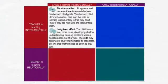The child and the teacher both do maths. One sign that the child has instrumental understanding is that the child does not know whether their answer is correct until the teacher or an adult tells them. The long-term effect is that the child has to learn ever more rules, developing shallow understanding of mathematical concepts.